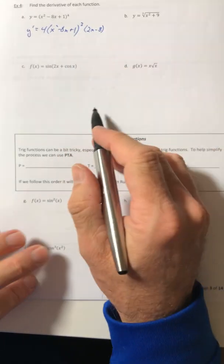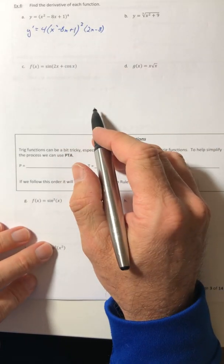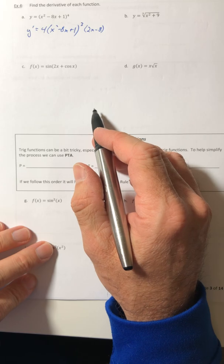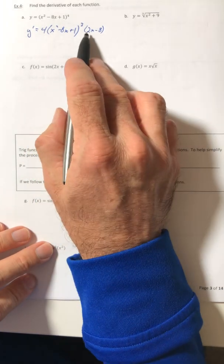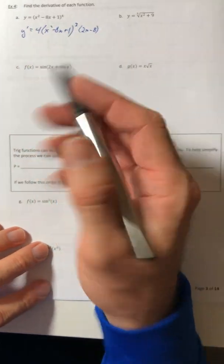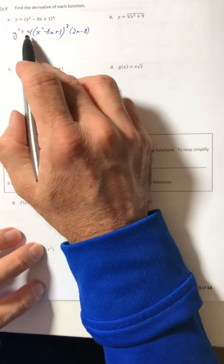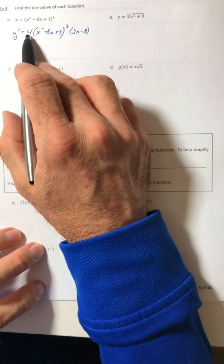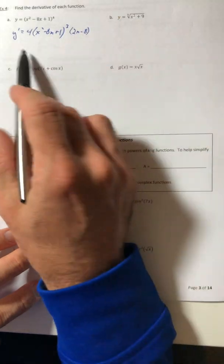Minus 8, and that's all you'd have to do. You can factor out a 2 and multiply it to the 4, you can multiply the 4 into the 2x minus 8, or you can just leave it alone.